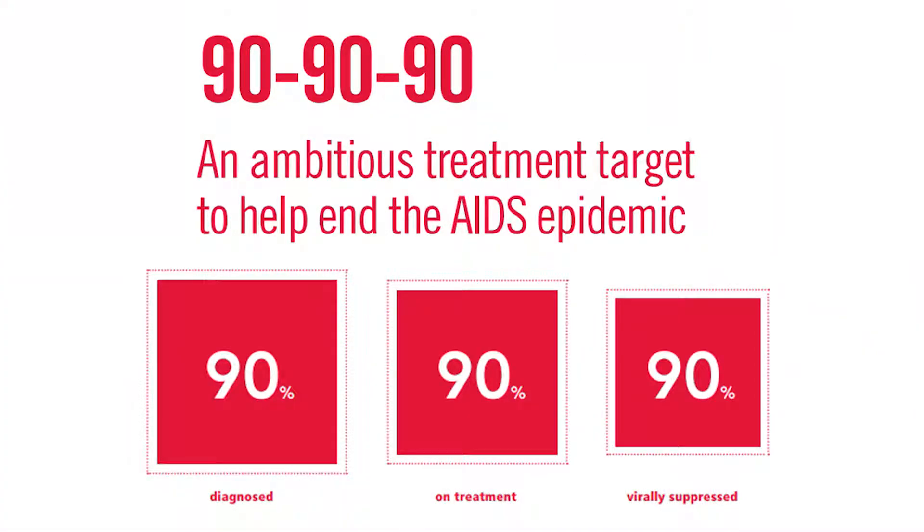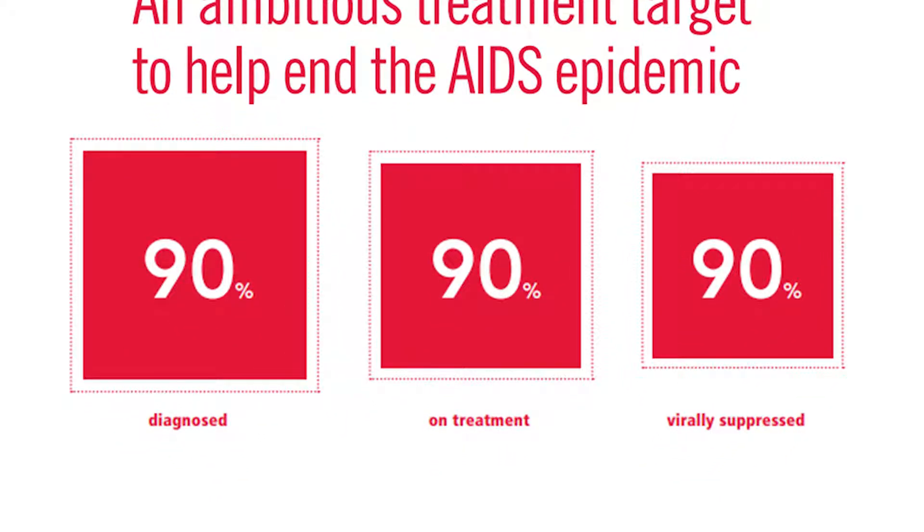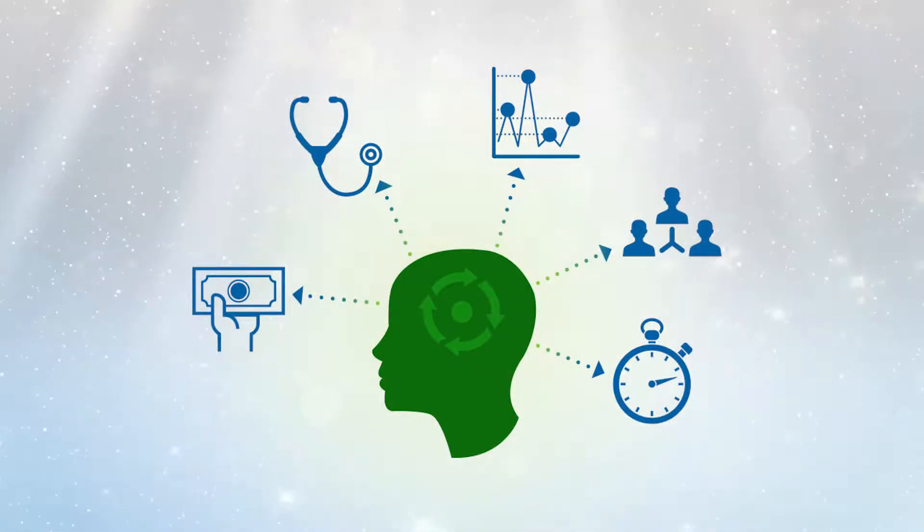That has prompted UNAIDS and a number of country governments to sign on to what's known as the UNAIDS 90-90 targets. One of the barriers to achieving these 90-90 targets has to do with behavioral factors.